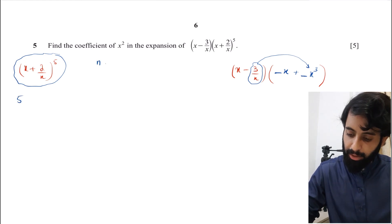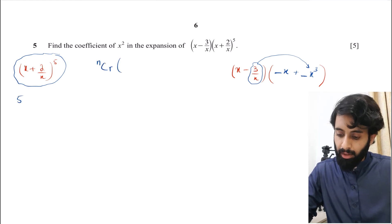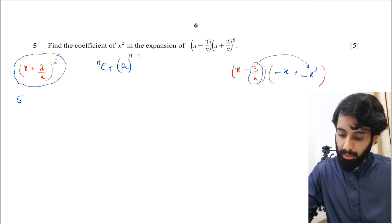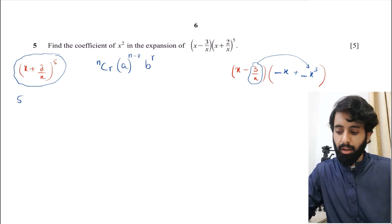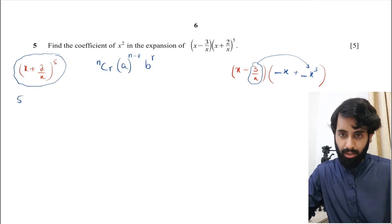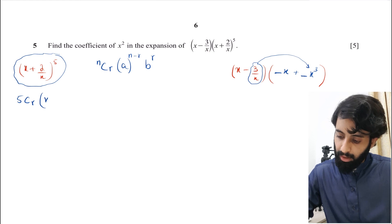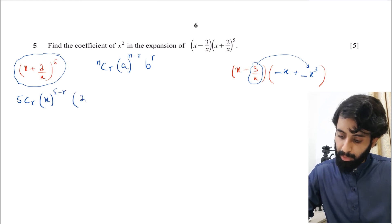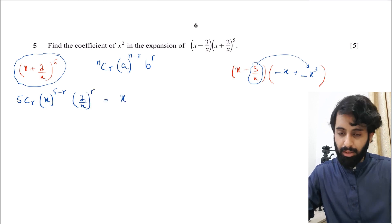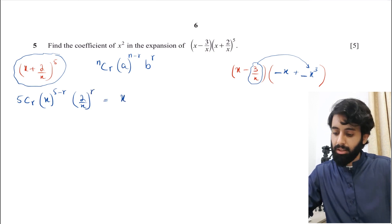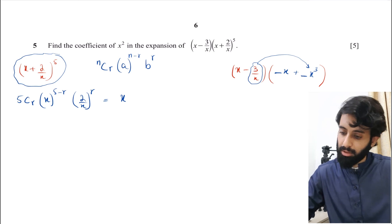I'm going to use the binomial formula: nCr · a^(n−r) · b^r. Here n = 5, a = x, and b = 2/x. So the general term is 5Cr · x^(5−r) · (2/x)^r. In one case I want this to equal x, and in the other I want it to equal x³.